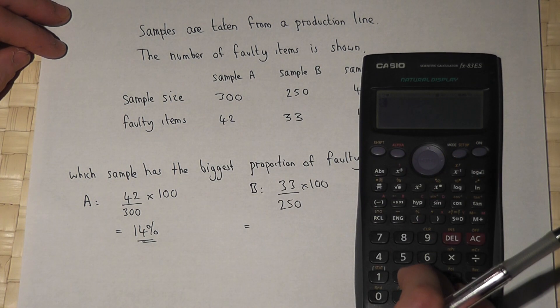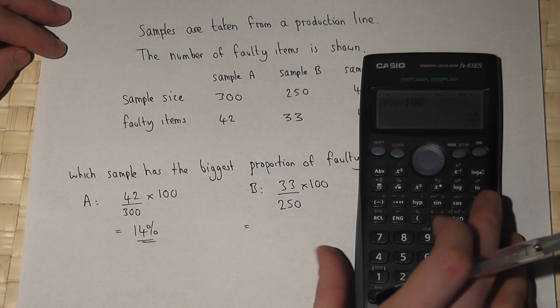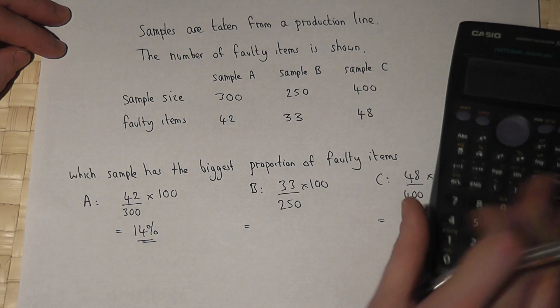In sample B, 33 divided by 250, times 100, works out to 13.2%.